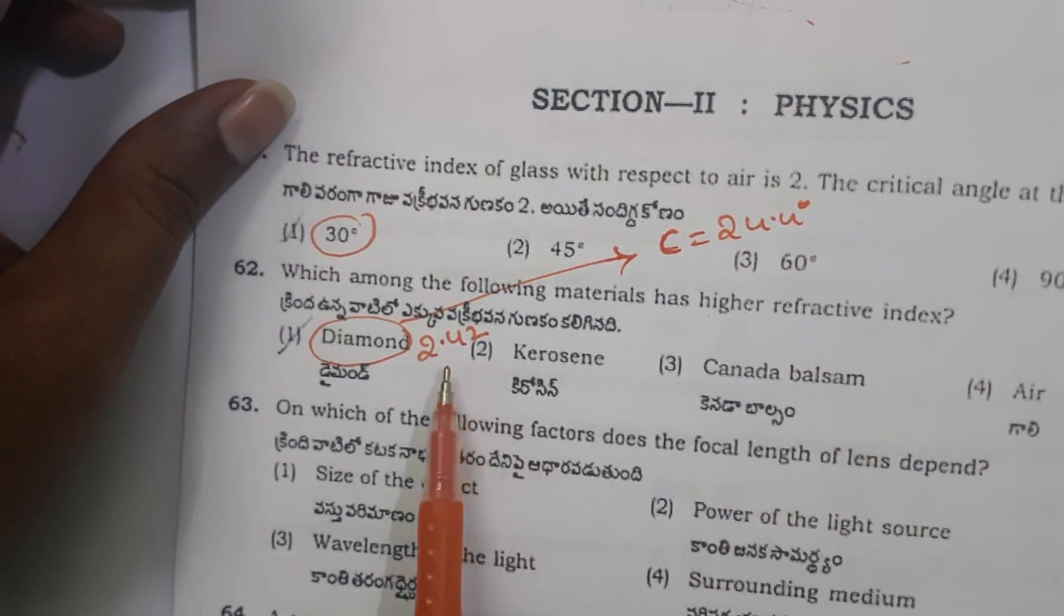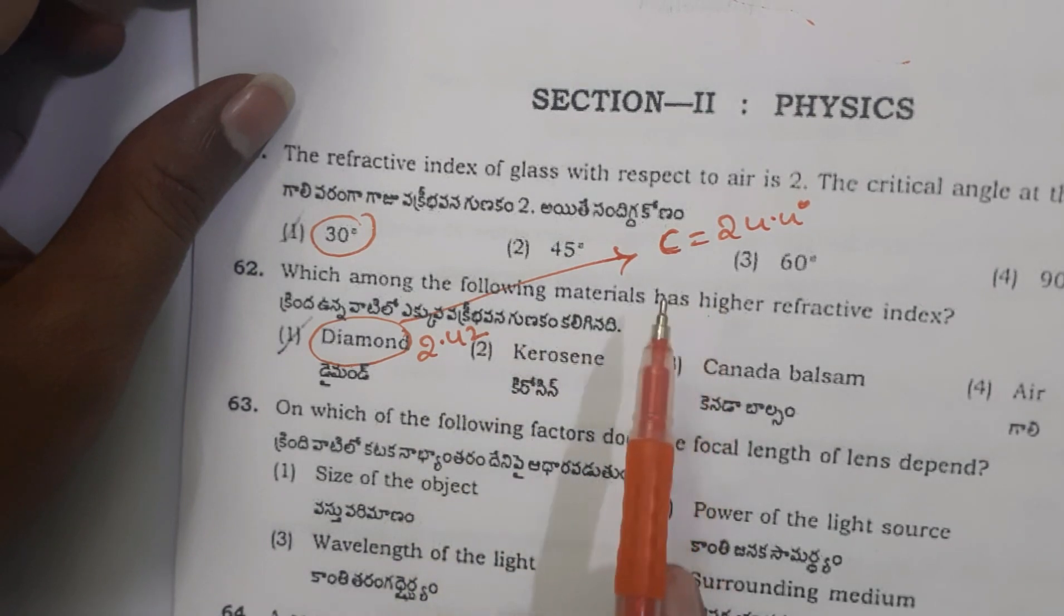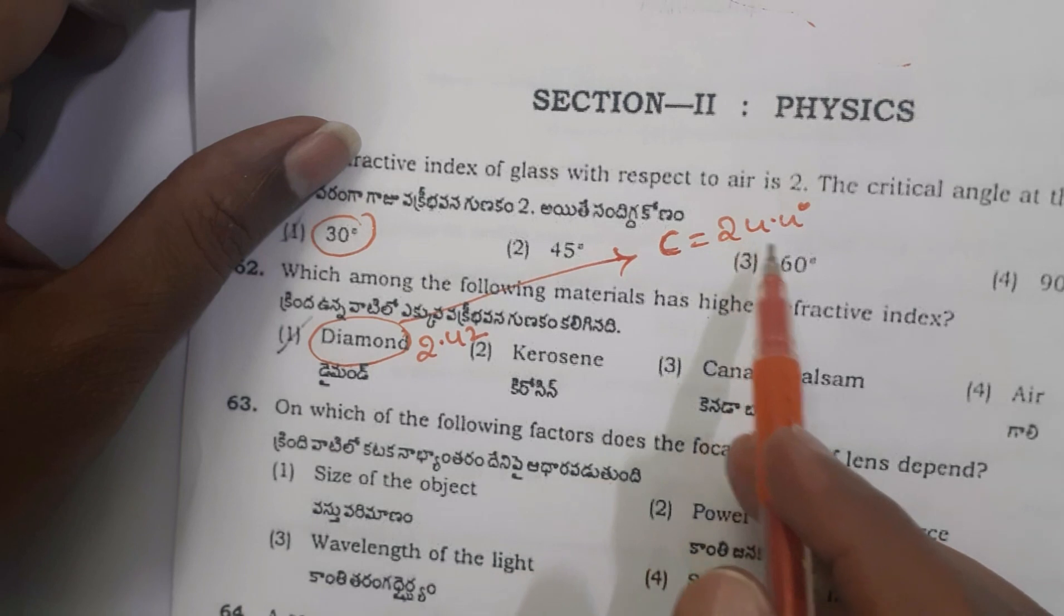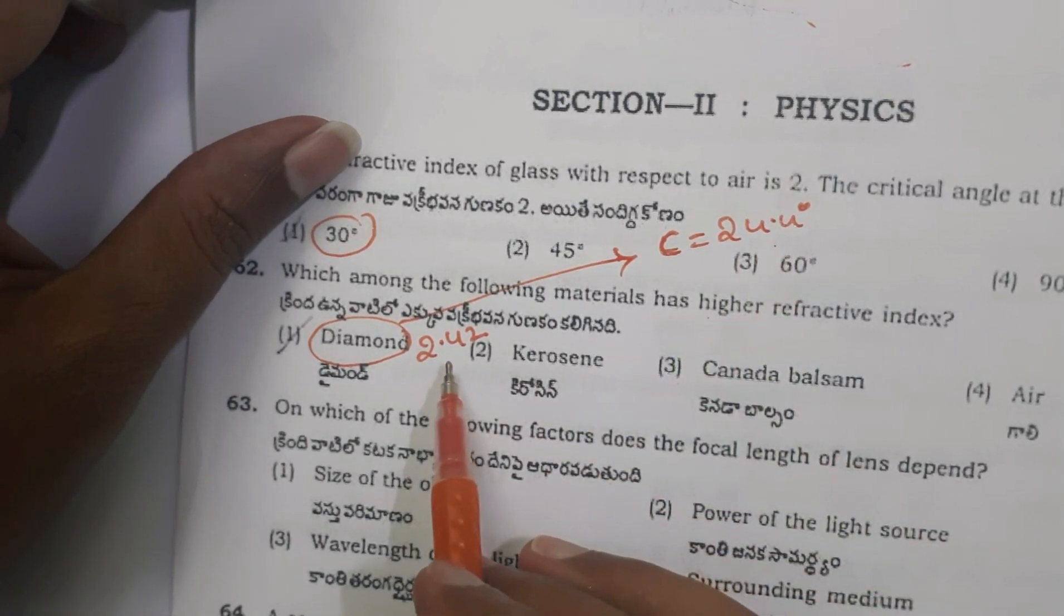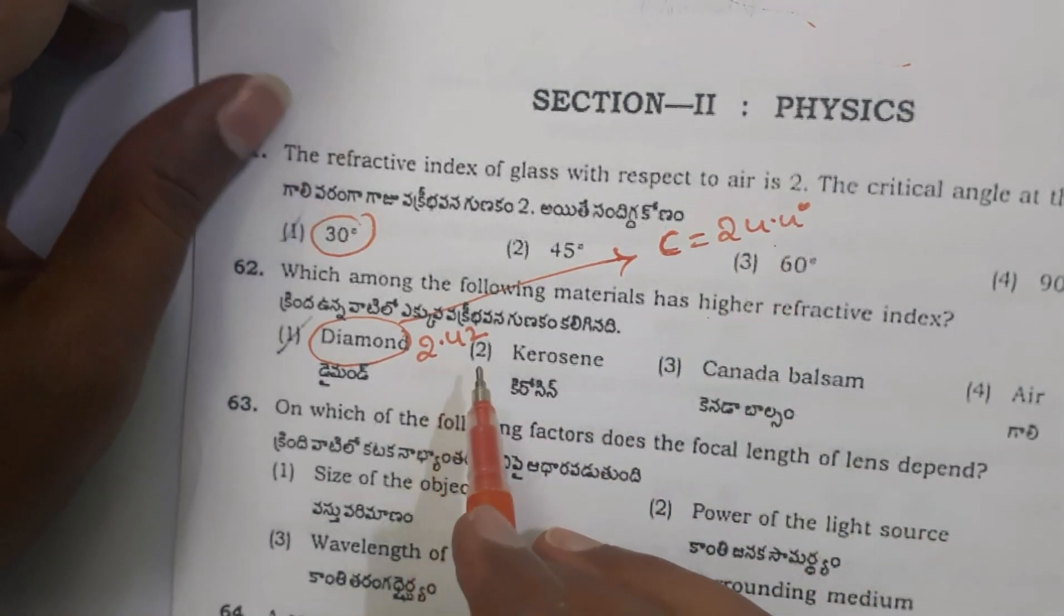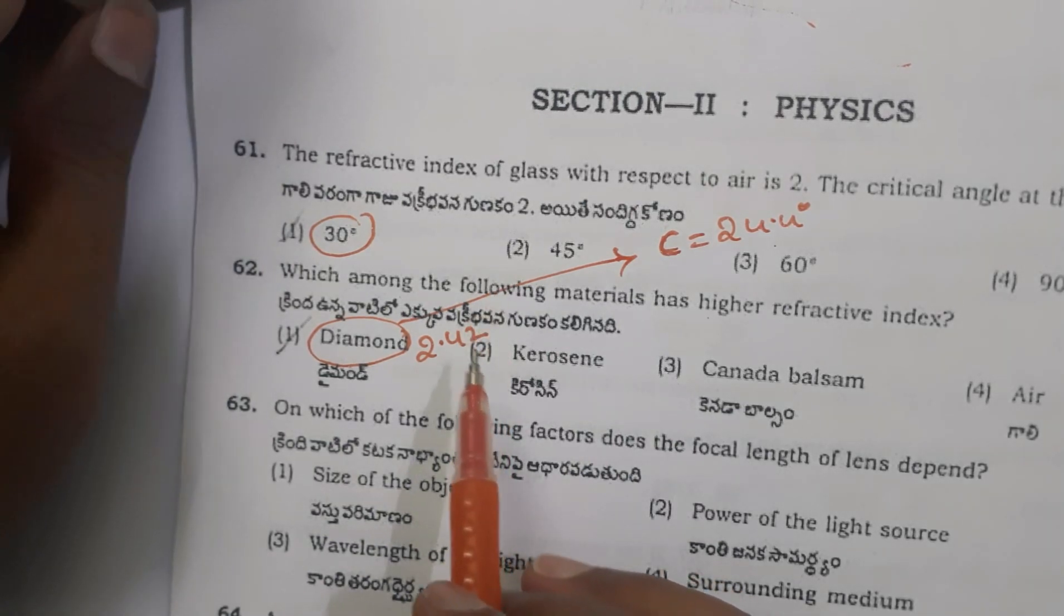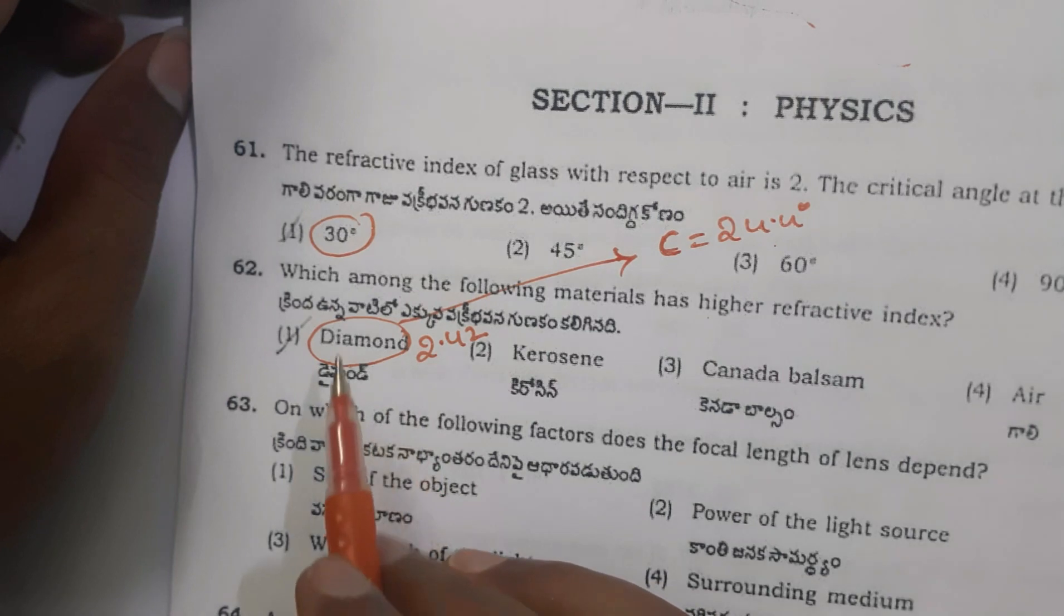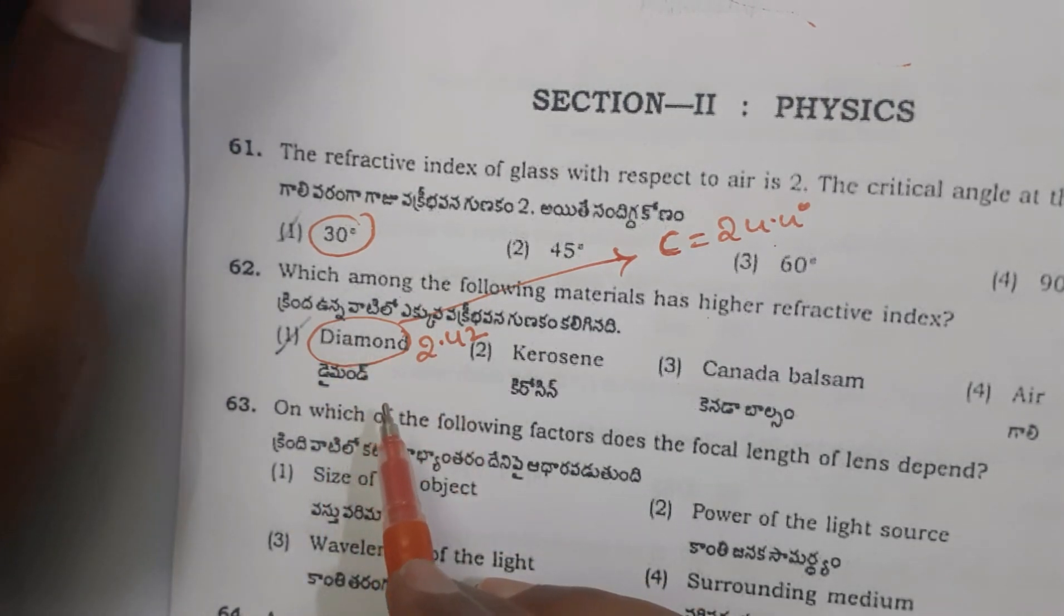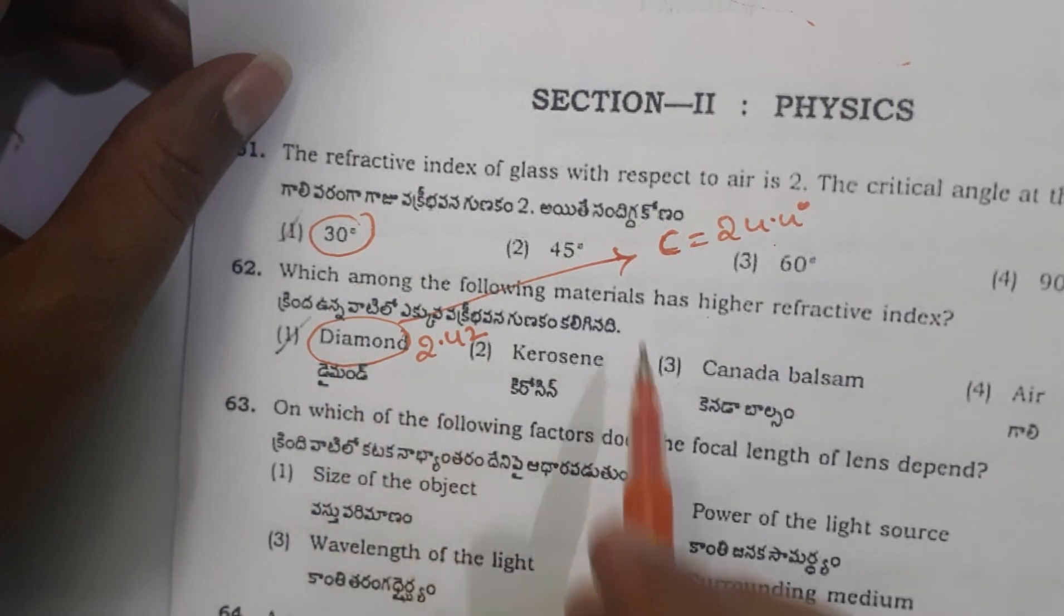When refractive index is higher, critical angle will be lower. So this critical angle value and higher refractive index allow total internal reflection inside the diamond, which makes it shine more than any other material.